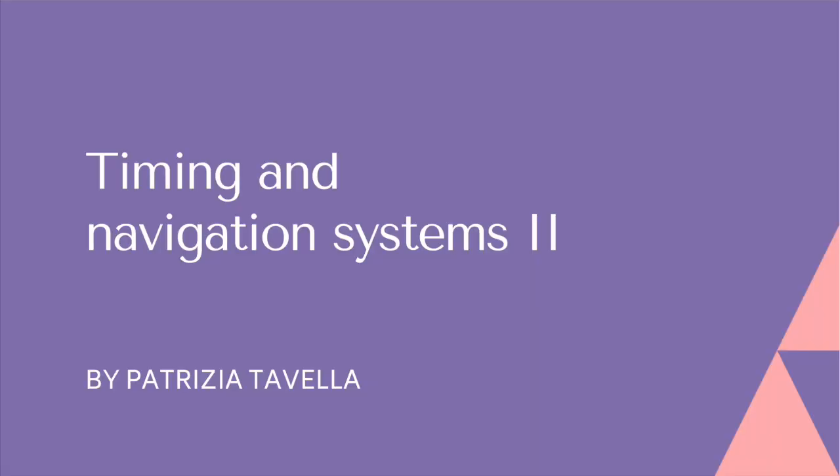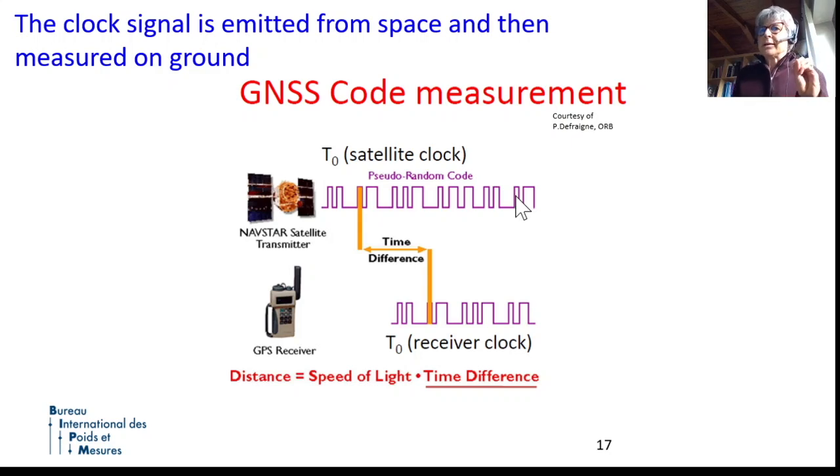We have the clock on board, we have the satellite, and the satellite is able to send this signal. We have on ground a receiver with an appropriate capacity to generate the same pseudo-code and to measure the time of flight of the signal.